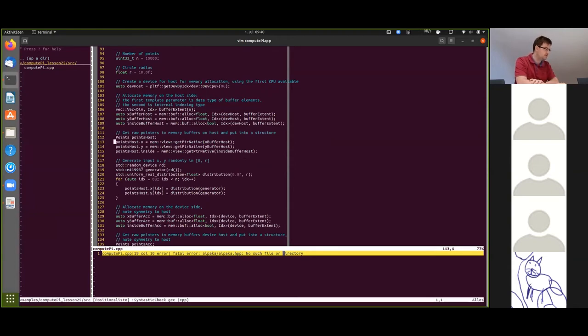We then get the raw pointers to these buffers with this mem-view-get-pointer-native API call and pass these raw pointers to the points struct, which we will later pass into the kernel. We then just generate some random numbers in this lower section here to initialize the host buffers, so that the points are scattered randomly across the area.